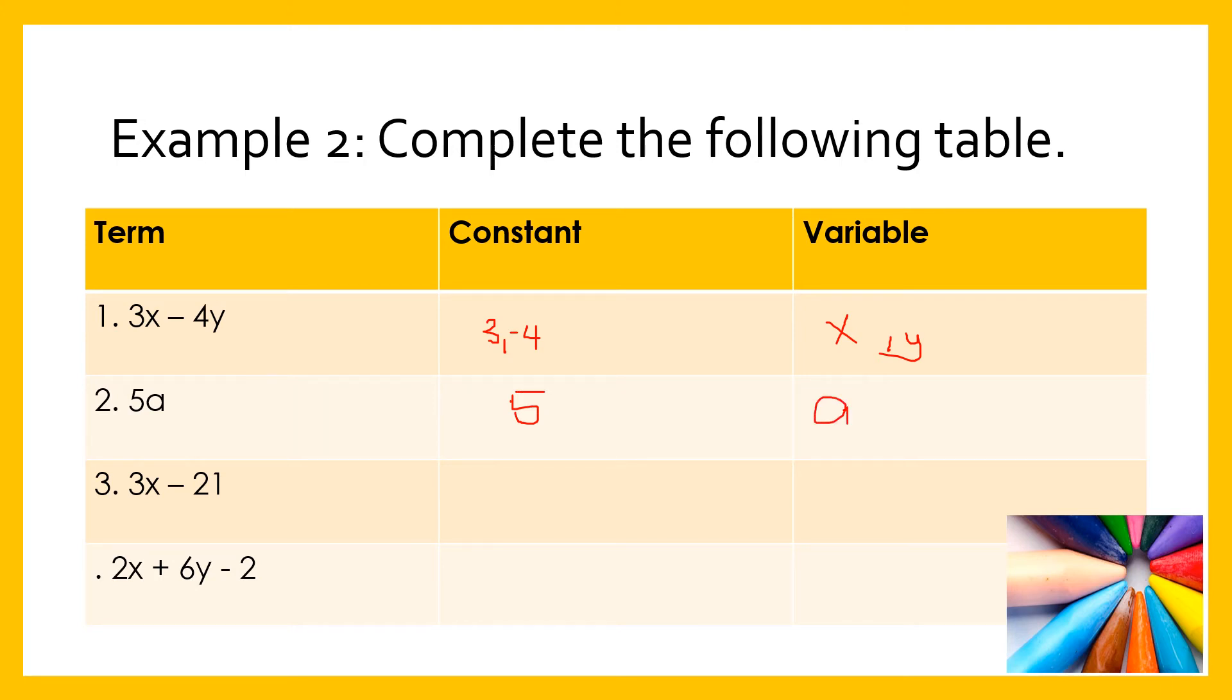In 3X - 21, the constants are 3 and -21, while the variable is X. In 2X + 6Y - 2, the constants are 2, 6, and -2, while the variables are X and Y.